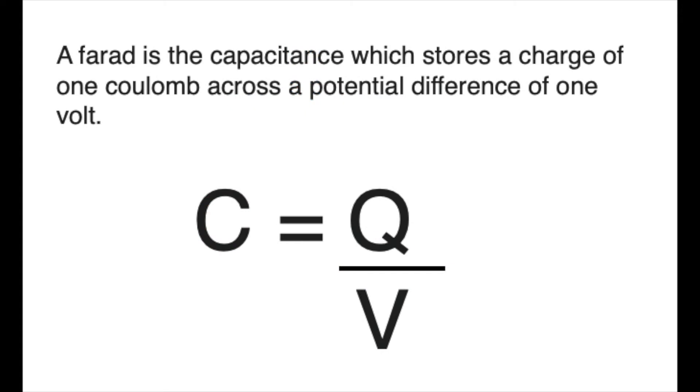So the definition is that a farad is the capacitance which stores a charge of one coulomb across a potential difference of one volt, giving us the equation C equals Q, the quantity of charge in coulombs, divided by V, the potential difference in volts.